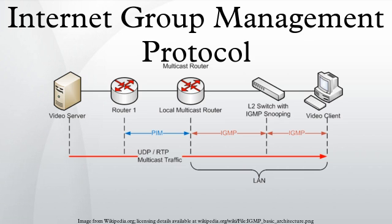Reserved: this field is reserved; it should be zeroed when sent and ignored when received. S Flag: when this flag is set, it indicates to receiving routers that they are to suppress the normal timer updates. QRV (Querier's Robustness Variable): if non-zero, it contains the robustness variable value used by the sender of the query; routers should update their robustness variable to match the most recently received query unless the value is zero. QQIC (Querier's Query Interval Code): this code is used to specify the query interval value used by the querier; if the number is below 128 the value is used directly, if 128 or more it is interpreted as an exponent and mantissa. Number of Sources specifies the number of source addresses present in the query; for general and group-specific queries this value is zero, for group-and-source-specific queries this value is non-zero but limited by the network's MTU.